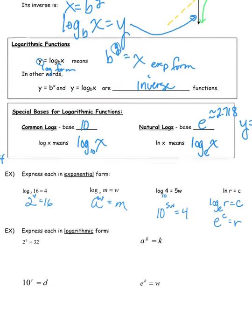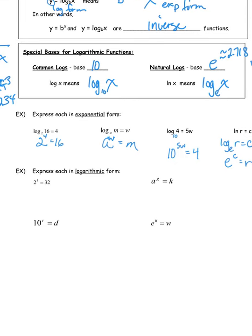Now we'll go from exponential form to log form. To do that, write the word 'log' first. Next, figure out the base — whatever has an exponent on it is the base, so here the base is 2. Be careful: when you write that 2, it is a subscript — smaller than the other letters and below the line. So it's log base 2 of the next number, and that's going to equal the exponent. The exponent is 5, so we write log base 2 of 32 equals 5. You can also read it as 'the log of 32 base 2 equals 5' — either way is fine.